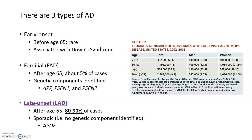One reason for this is that APP, or the amyloid precursor protein, which generates amyloidogenic A-beta and potentially A-beta plaques — the gene encoding that protein is located on chromosome 21. Individuals with Down syndrome have trisomy 21, or three copies of chromosome 21, and that excess of APP because of the one extra copy of the gene is likely what leads to this early onset Alzheimer's.